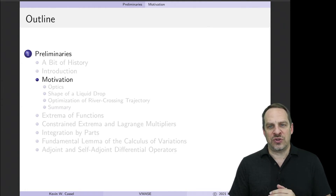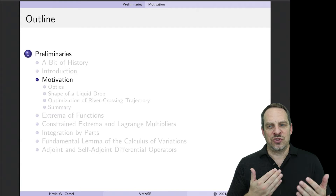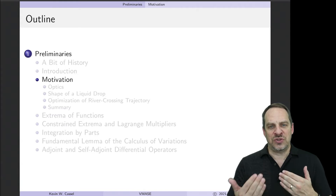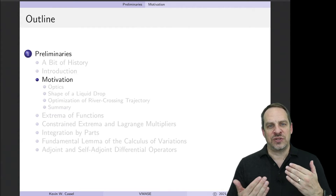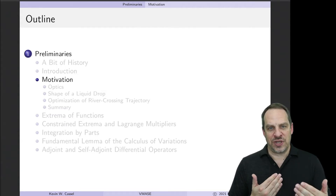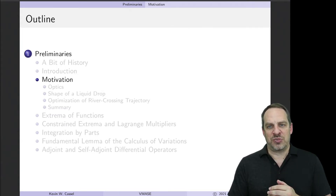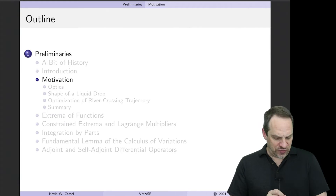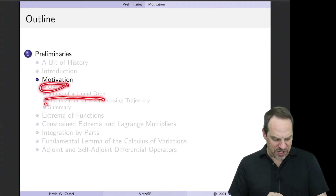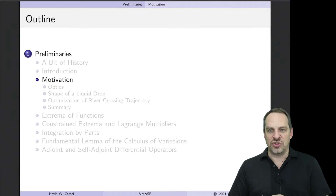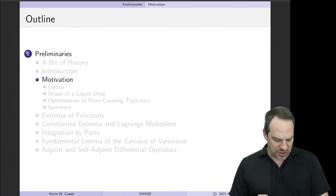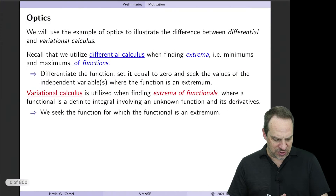I want to show you that first using optics. It will clearly distinguish between when we would use differential calculus versus variational calculus to solve the optics problem. The first problem will be optics, then we'll look at the shape of a liquid drop, and then the optimization of a river crossing trajectory in the next two videos.